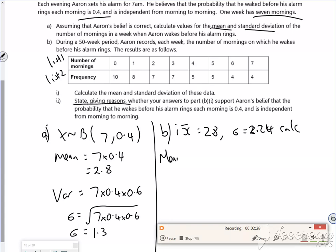So let's have a look at the mean. The mean is the same, so that's okay. But the standard deviation is different. It's quite far away from it. There's a massive difference between 1.3 and 2.24.